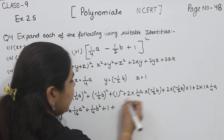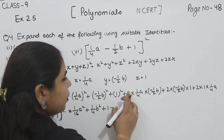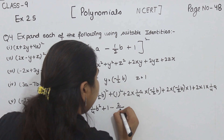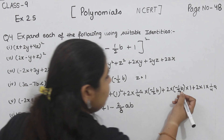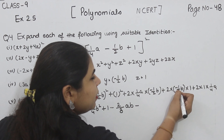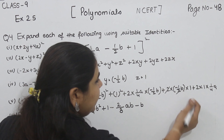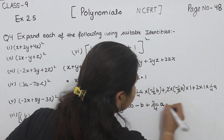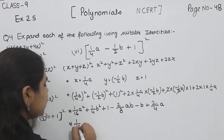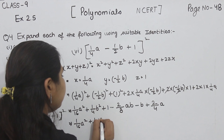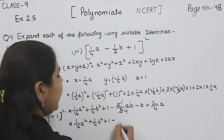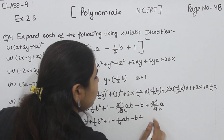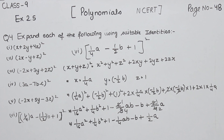Now solving with signs: plus minus minus for 2XY. So 2 times 1/4 a times minus 1/2 b: numerator 2 times 1 times 1 is 2, denominator 4 times 2 is 8, giving minus 1/4 ab. For 2YZ: 2 times minus 1/2 b times 1 gives minus b. For 2ZX: 2 times 1 times 1/4 a gives 1/2 a. So the final result is 1/16 a square plus 1/4 b square plus 1 minus 1/4 ab minus b plus 1/2 a. With this we have completed question number 4.